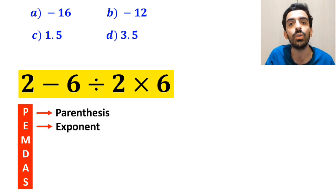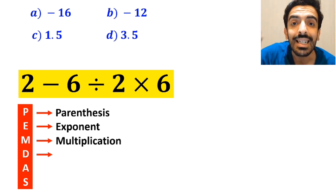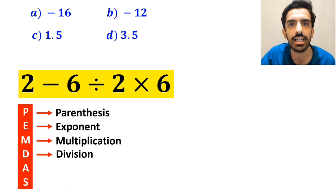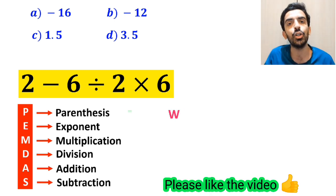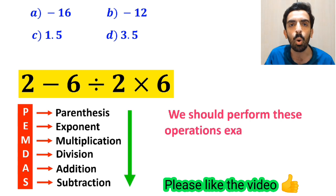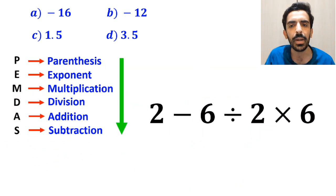P stands for parenthesis, E stands for exponent, M stands for multiplication, D stands for division, A stands for addition, and S stands for subtraction. We should perform these operations exactly in order from top to bottom.